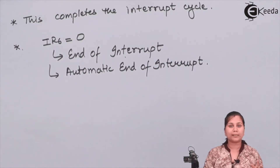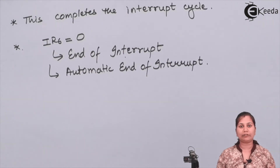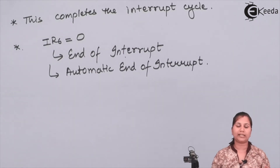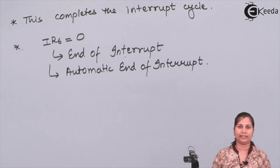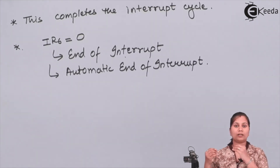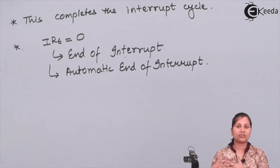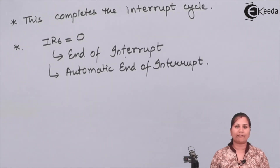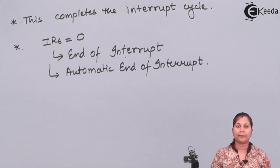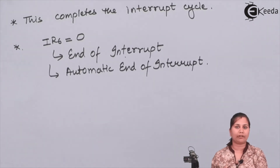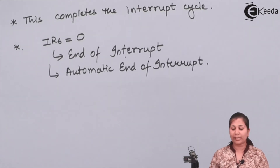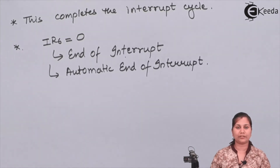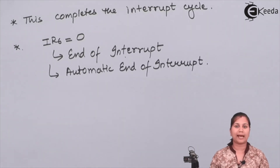This completes the interrupt sequence of the 8085 and the 8259 — how they interface, how they communicate, and how an interrupt request is accessed by the microprocessor when the 8259 is connected between the microprocessor and the interrupting device. I hope this topic is clear. Thank you.